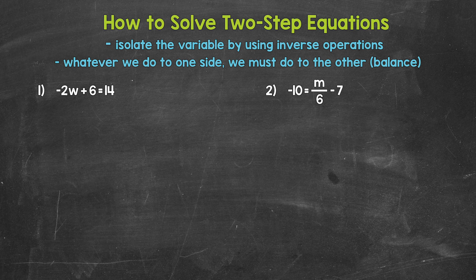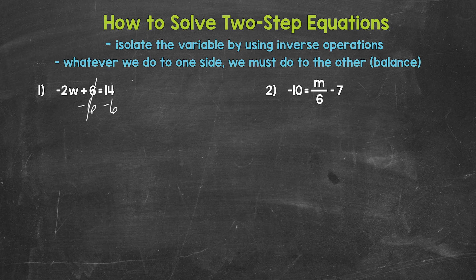What's the inverse operation of addition? Subtraction. So we need to subtract 6 from the left side of the equation. Whatever we do to one side of the equation, we must do to the other, so subtract 6 from the right side as well. On the left side, we are adding 6 and subtracting 6, so these 6s cancel each other out. We have negative 2w equals 14 minus 6, which gives us 8. So we have negative 2w equals 8.